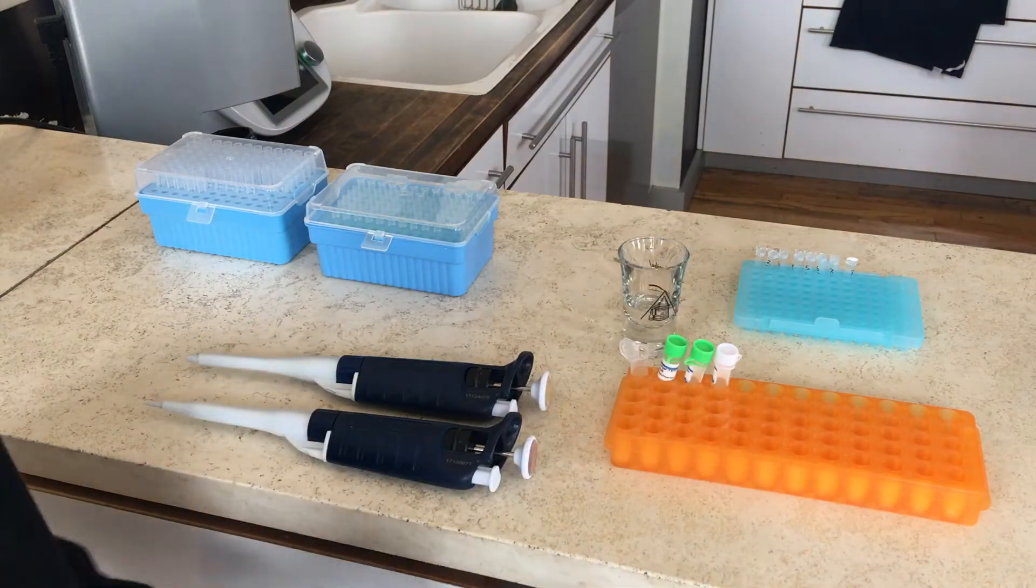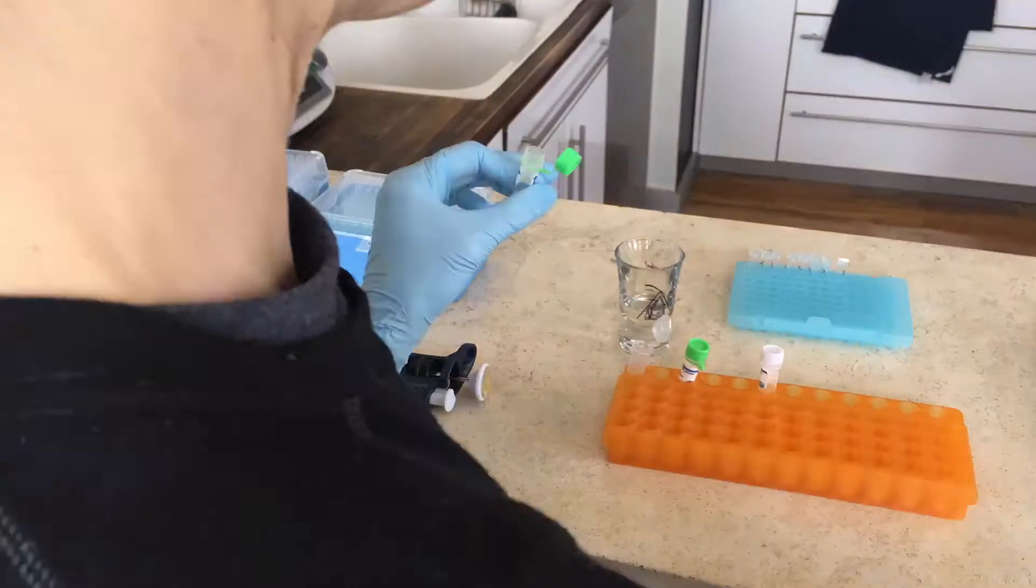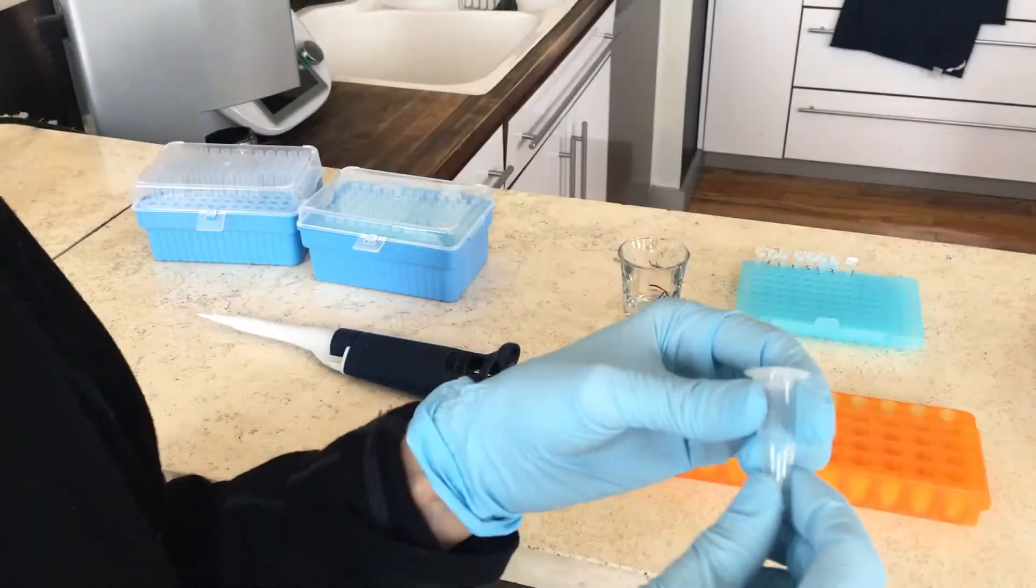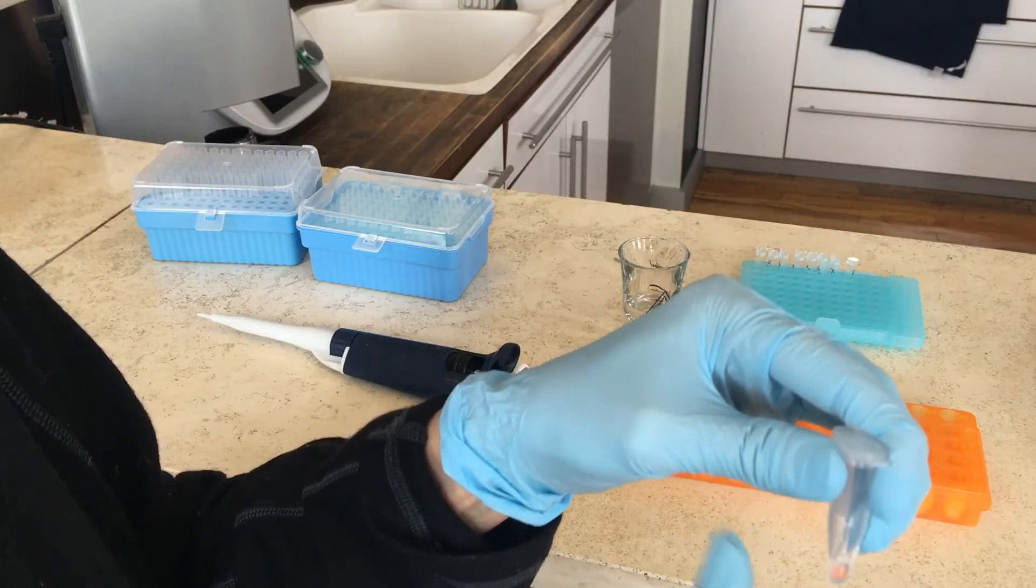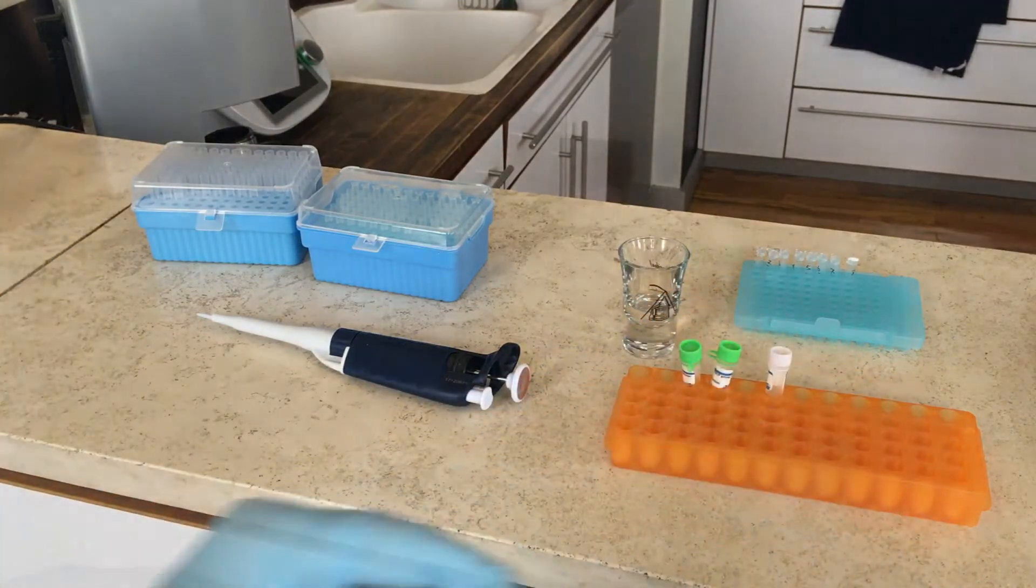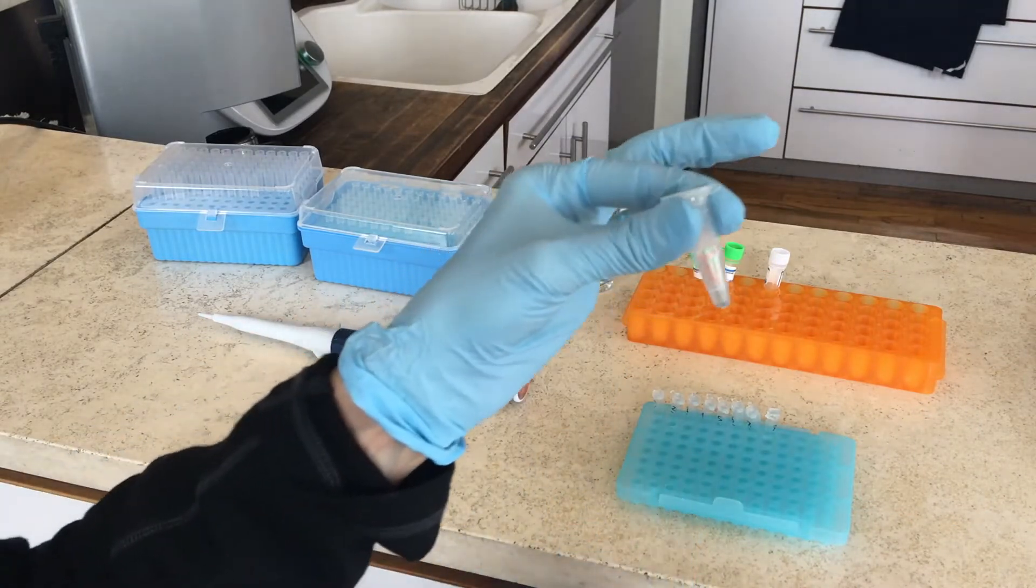Once you have all that in your tube, you're going to flick it a little bit so it all gets mixed together. And then you're going to portion that mix that you got in your tube into the 8 new tubes that you've labeled earlier that are still empty.